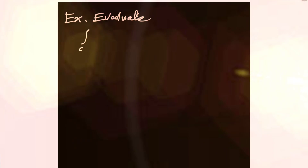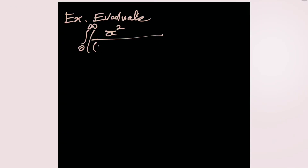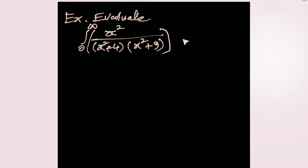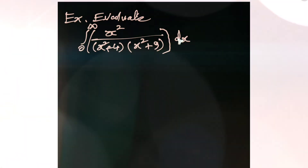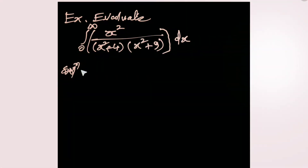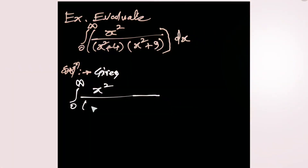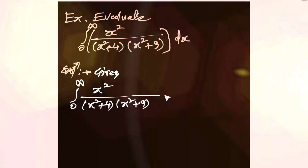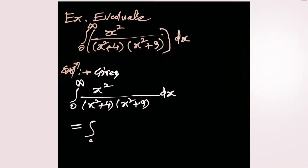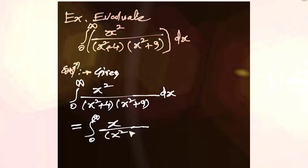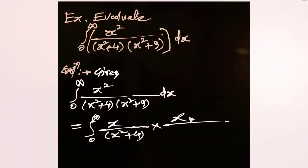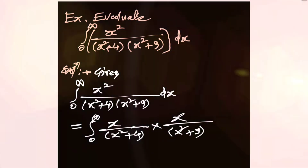Now evaluate the integral from 0 to infinity of x² divided by (x² + 4)(x² + 9) dx, using the Parseval's identity. We can rewrite the integrand by splitting x² as [x/(x² + 4)] times [x/(x² + 9)] and integrate with respect to x.